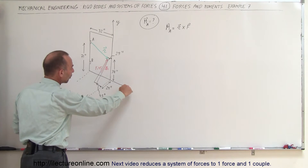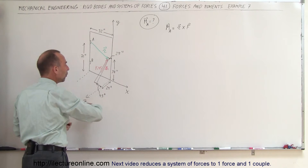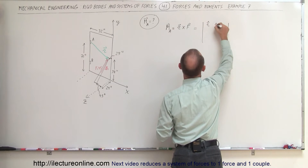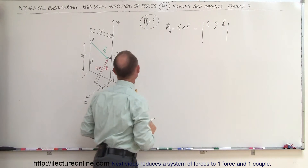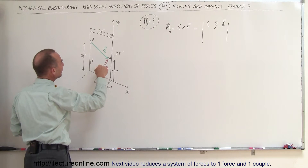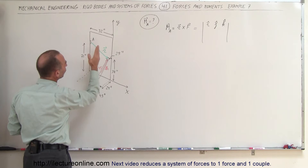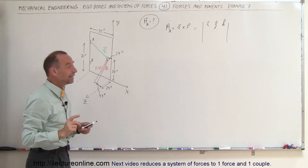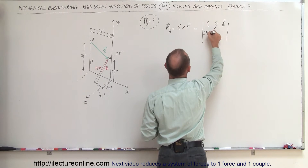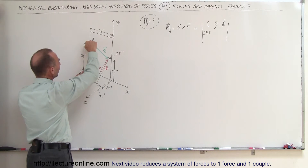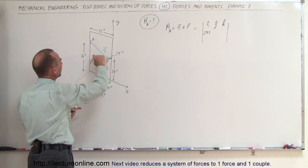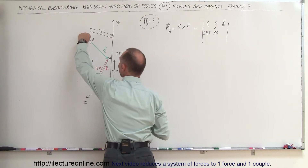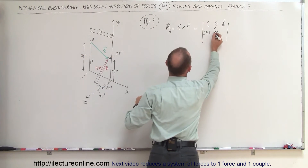X is in the direction of the width of the door, Y is the vertical direction, and Z is away from the door. Setting up the matrix with I, J, and K: the X component of R is the distance from the edge of the door to the door handle — 32 minus 2.5 equals 29.5 inches. The Y component is 71 minus 38 = 33 inches, but it's negative 33 because we go from a higher position down to a lower one.